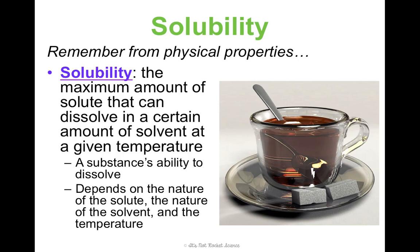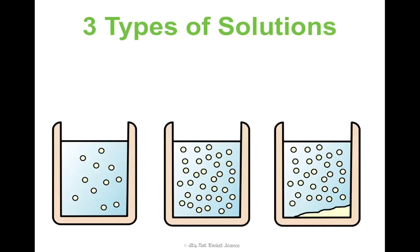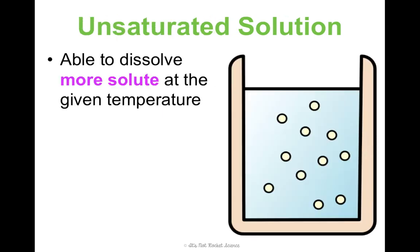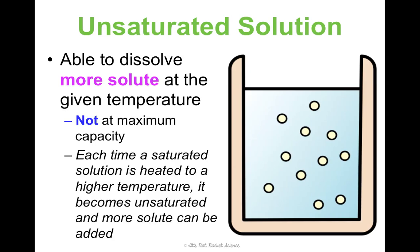Based on solubility, we can get three types of solutions: unsaturated, saturated, or supersaturated. Hopefully the pictures are giving you a little hint. An unsaturated solution is one that is able to dissolve more solute at the given temperature — it's not at its maximum capacity. For example, if water can hold 10 grams of lemonade powder at room temperature, an unsaturated solution would be if you only had 2 grams in the water. If we heat it to a higher temperature, a solution will always become more unsaturated — you can always add more solute at higher temperatures.